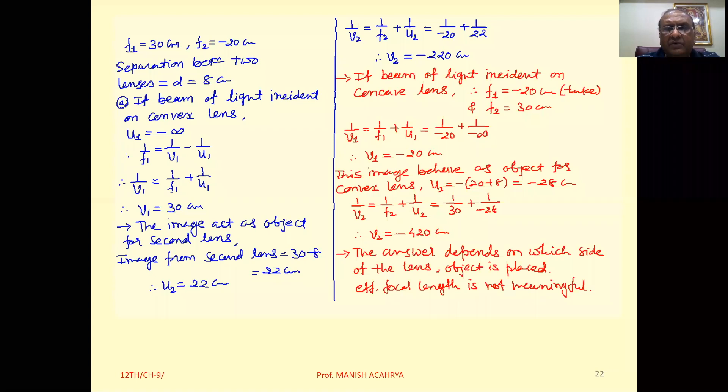1 upon F equal to 1 upon F1 plus 1 upon F2 minus D upon F1 F2. We have F1, F2, and D values. This equation wasn't in the text, so if it comes in an exam, we can use it directly.